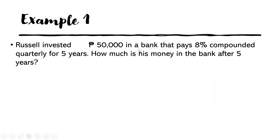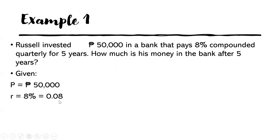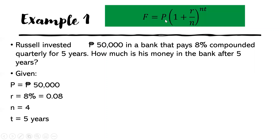Example one: Russell invested P50,000 in a bank that pays 8% compounded quarterly for five years. How much is his money in the bank after five years? We are asked to solve for the future value. The principal is P50,000, the annual rate is 8% or 0.08 in decimal, N is 4 because the interest is given quarterly, and the time is five years.